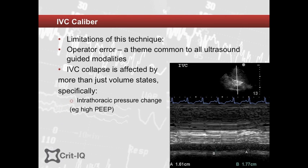There are several issues with measuring IVC. Firstly, operator error. Secondly, the IVC diameter and collapsibility are affected by far more than just volume status — specifically intrathoracic pressure, including high PEEP levels.